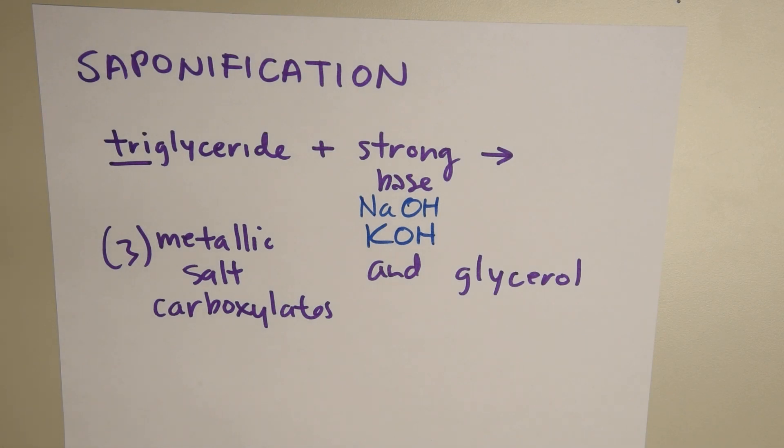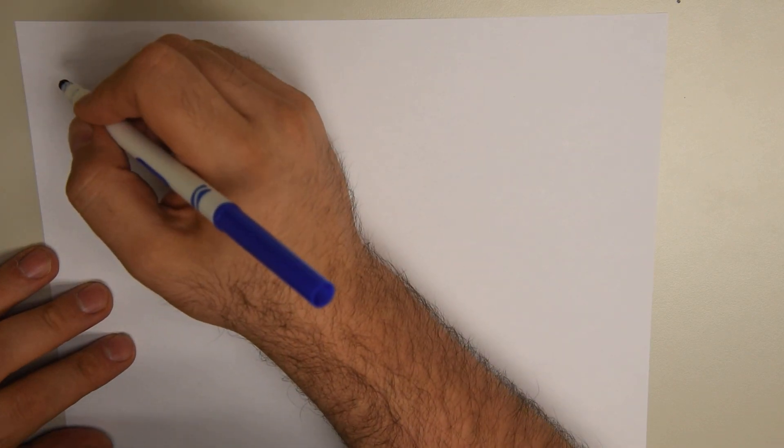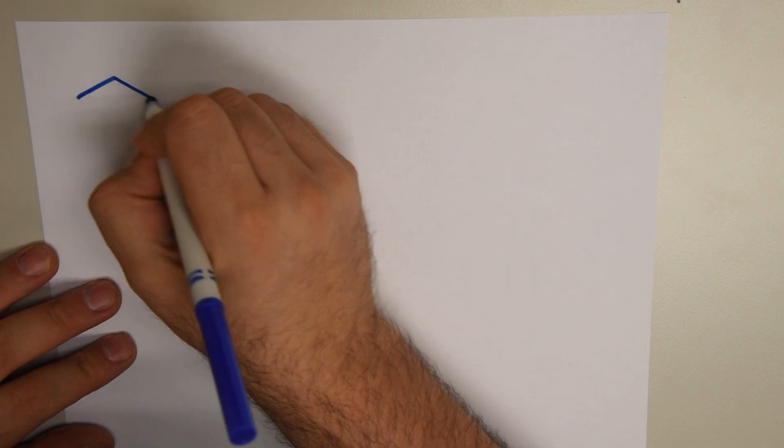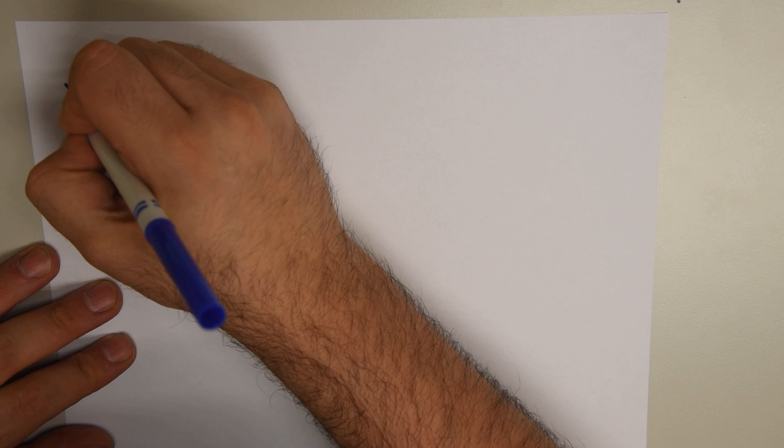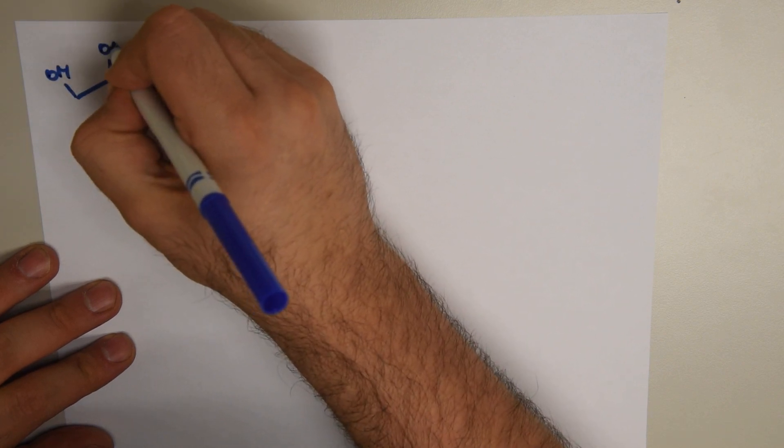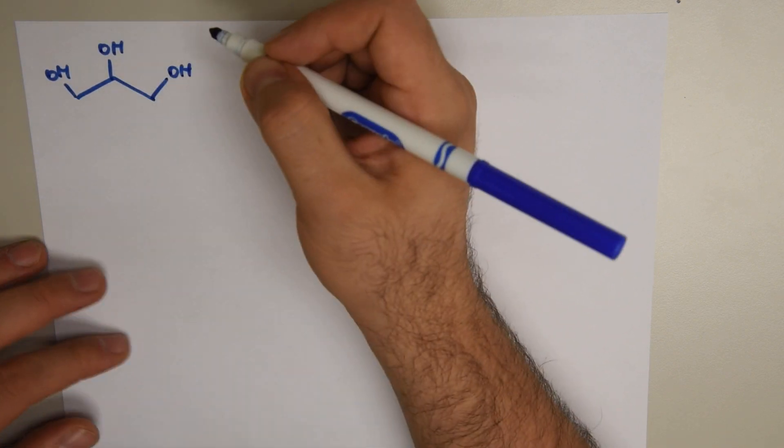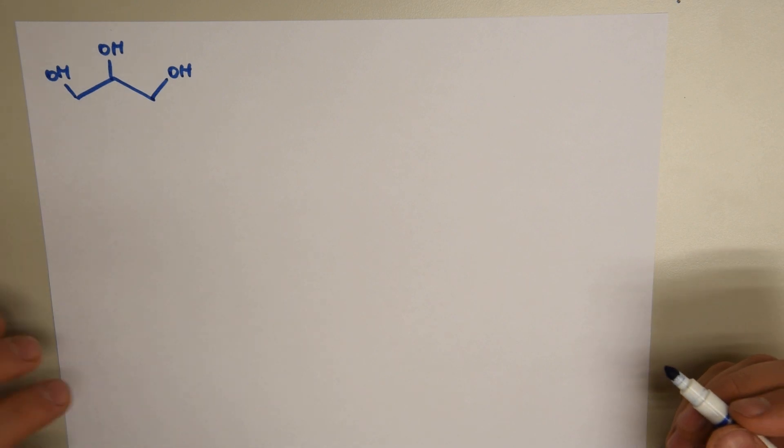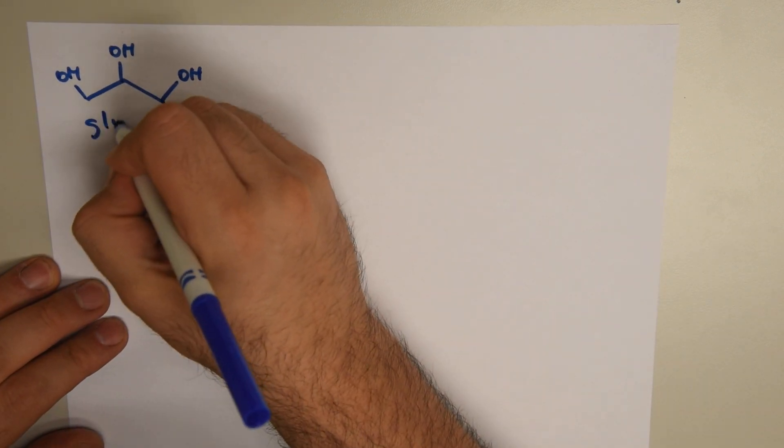So let's look at the very specific example. First, let's draw a triglyceride. If you remember, triglycerides come from three fatty acids joining together with a glycerol molecule. Remember, the glycerol molecule is a three-carbon chain with hydroxy groups attached to each of the carbons. So it's basically a polyalcohol, and this is called glycerol.